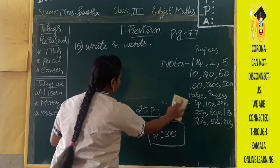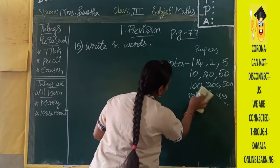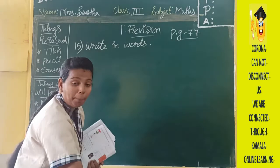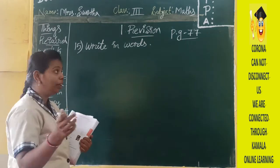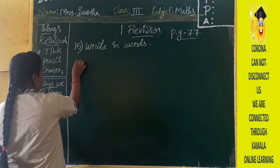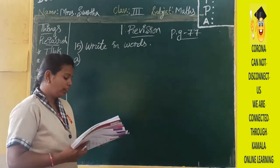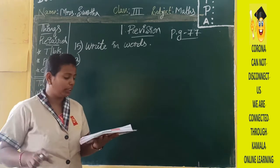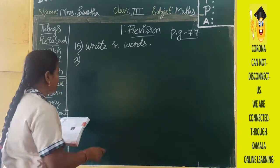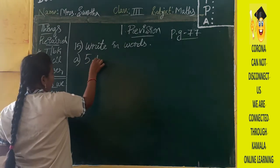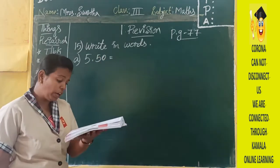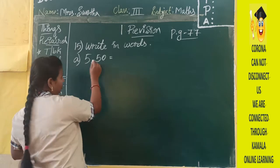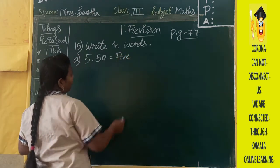Now in this 15th bit, they have given you the amount in number form and you have to write it in word form. See, the first one — write the following amounts in words. The first one is 5.50. This number is five, so first you write F-I-V-E. Whenever you find a decimal point, you stop and write 'rupees'. So — five rupees.